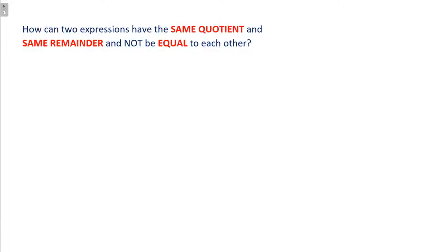Hey there, math hoppers. A question came in after our last division problem that said, how can we have two expressions that have the same quotient, so the same answer to a division problem, and the same remainder, and not be equal to each other?